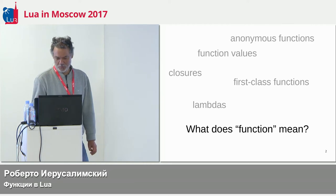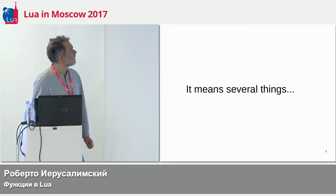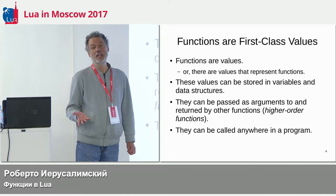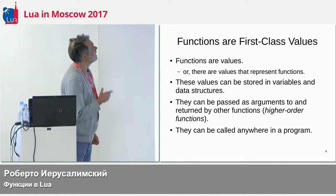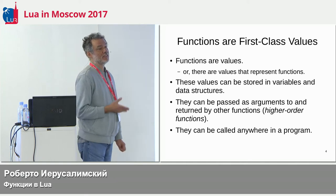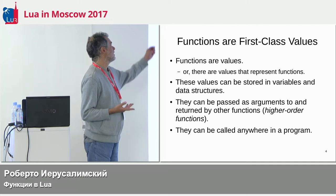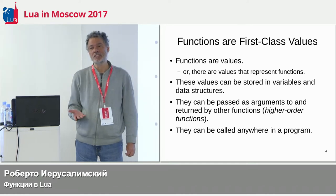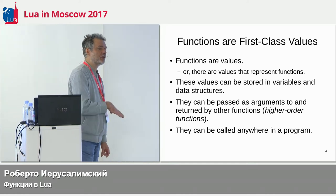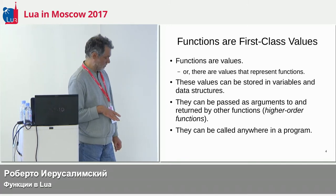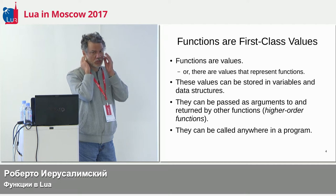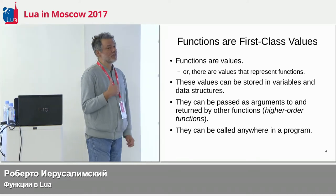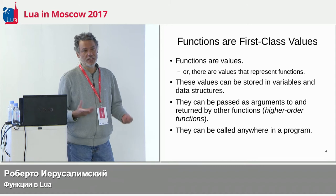The first important property we want from functions in good languages nowadays is that they are first-class values. What does that mean? First, it means that functions are values, so we can assign them to variables, we can pass them as parameters to other functions, we can return functions from other functions, and we can also store functions in data structures in general, just like any other values.